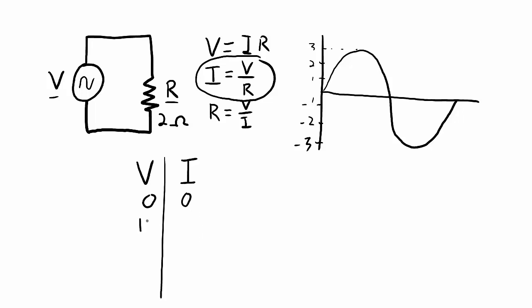When the voltage is 1 volt, then the current is going to be 1 over 2, or it will be 0.5 amps. When the voltage is at 2 volts, 2 over 2, I will have a current of 1 amp. And when the voltage reaches its peak at 3 volts, I'll have a current of 1.5 amps.